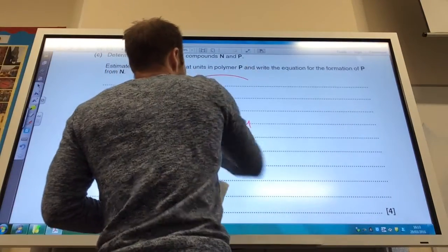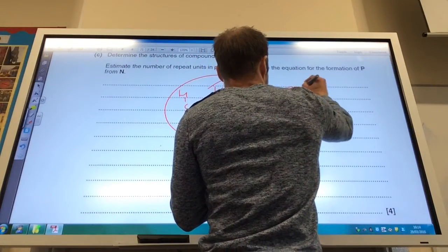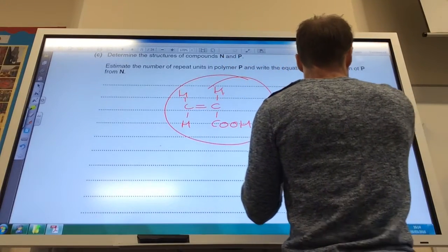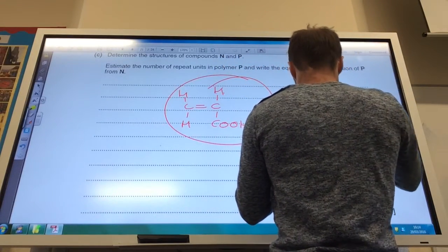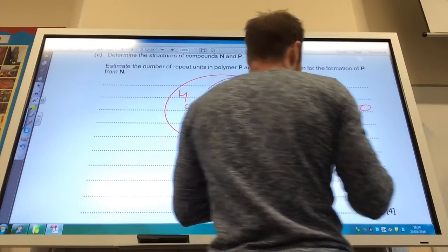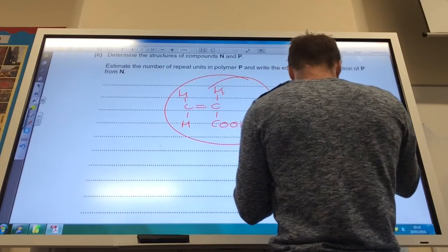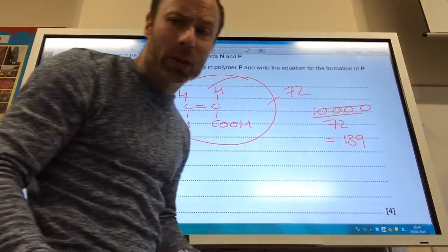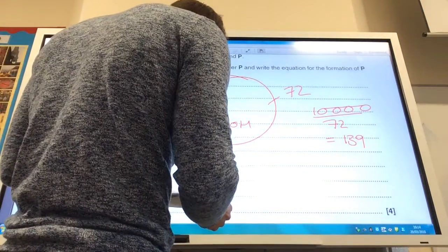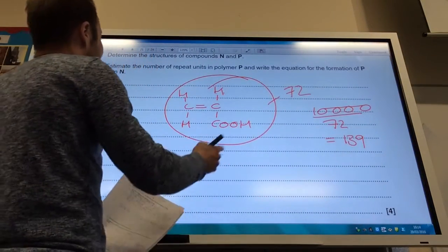But P, if you add all of that up, you get that to be 72. If you take 10,000, which I believe it was, which was the MR of polymer P, divide it by 72, you get it to be 139. It's got to be a whole number. It doesn't come out to be exactly that, but 139 gives you the nearest whole number.